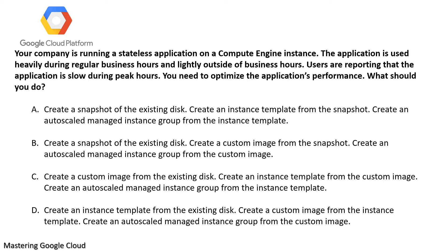First question: Your company is running a stateless application on a compute engine instance. The application is used heavily during regular business hours and lightly outside of business hours. Users are reporting that the application is slow during peak hours. You need to optimize the application's performance. Here you see the application is running on a compute engine instance and you need to create an instance group for optimization.